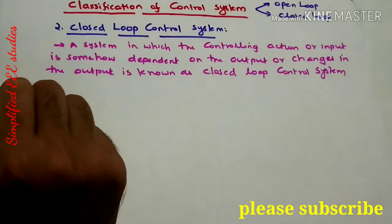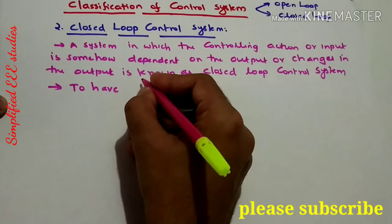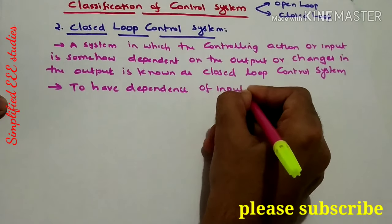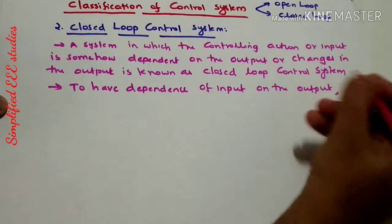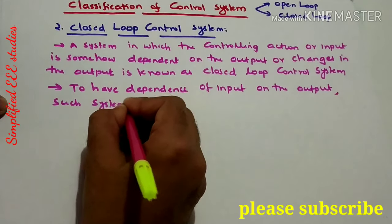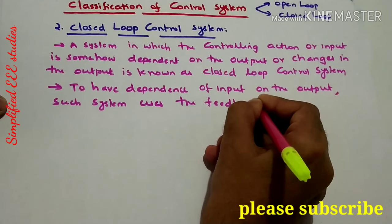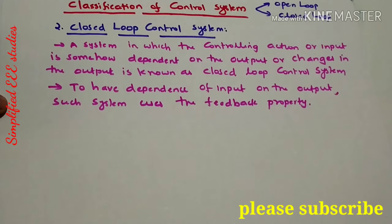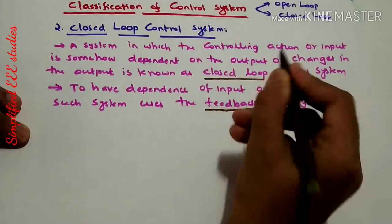One of the most important factors of closed loop control system is there will be one feedback element. To have dependence of input on the output, such systems use the feedback property. Just as after a workshop or seminar we conduct a feedback session to evaluate the output, there will be one feedback in a closed loop control system.